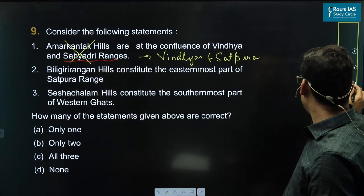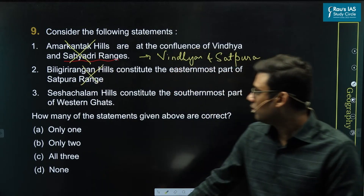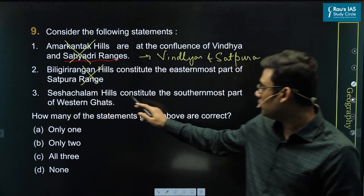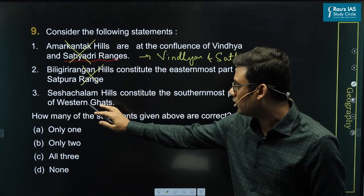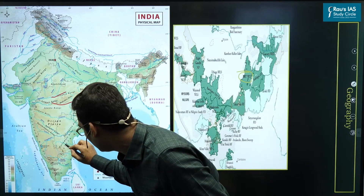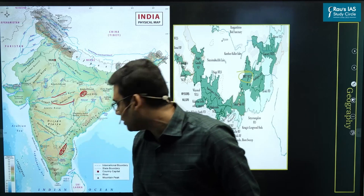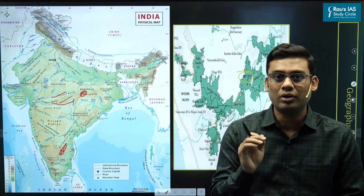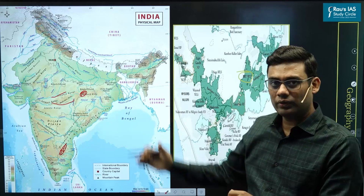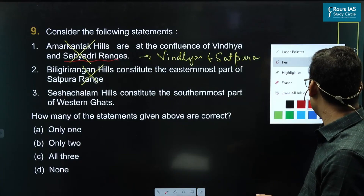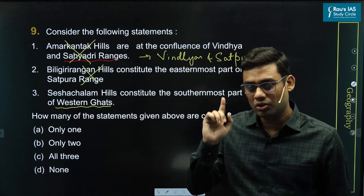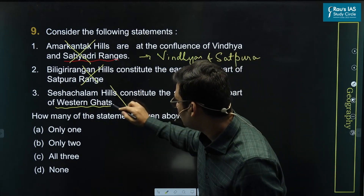The BR hills are a part of the Western Ghats, not Satpuda — so that statement is incorrect. The third statement says Sesha Chalam hills constitute the southernmost part of Western Ghats. However, Sesha Chalam hills are part of the Eastern Ghats, not the Western Ghats. Sesha Chalam is a dissected portion of the Eastern Ghats, so the statement should say Eastern Ghats, not Western Ghats.